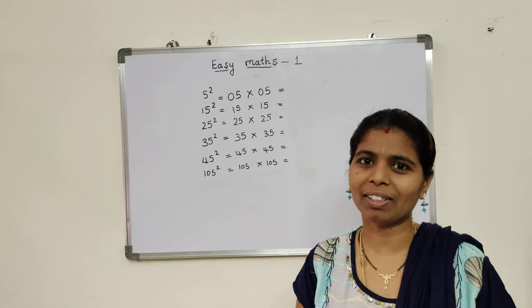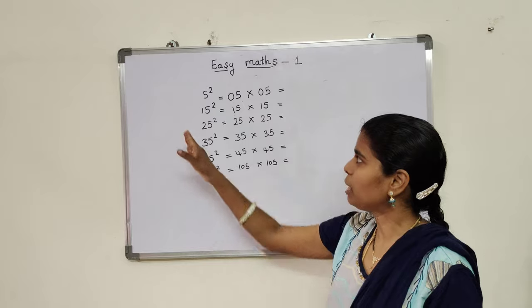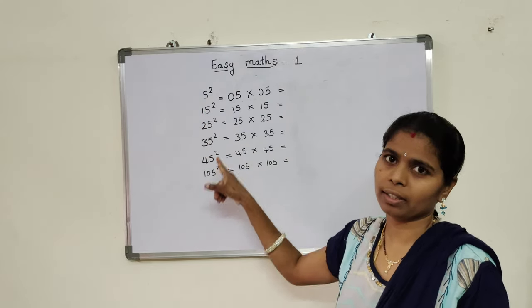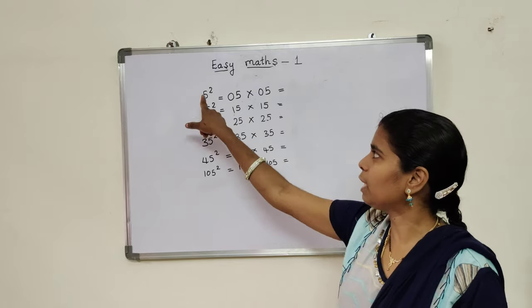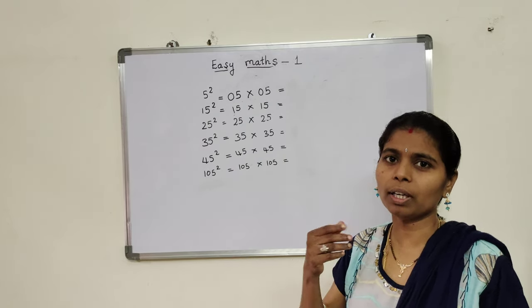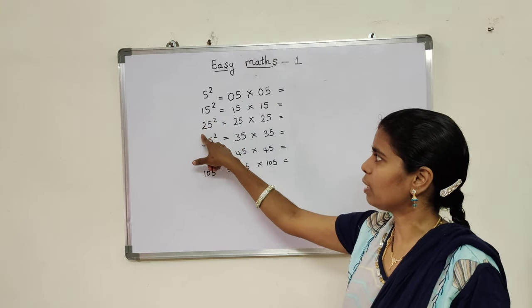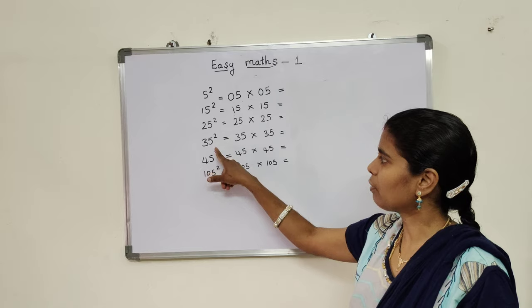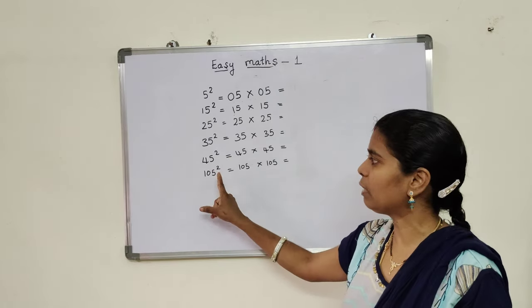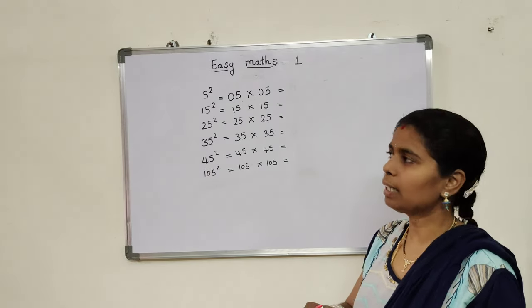Now we will start our Class 1. I am teaching today easy problems relating to 5 squares, and any number ending with 5 squares. Any number, how to do the 5 square. See here: 15 square, this is ending with 5. 25 square, 35 square, 45 square, 105 square, like that. How many squares also which end with 5, easy technique to do the problem.